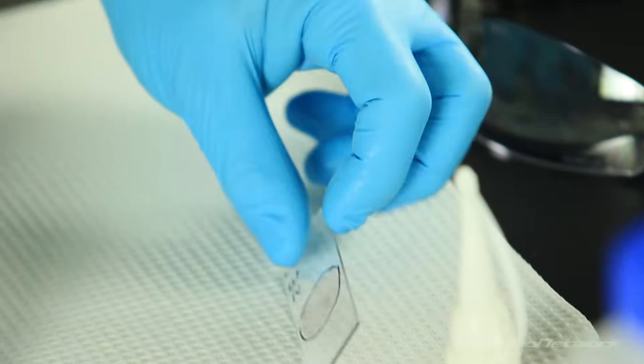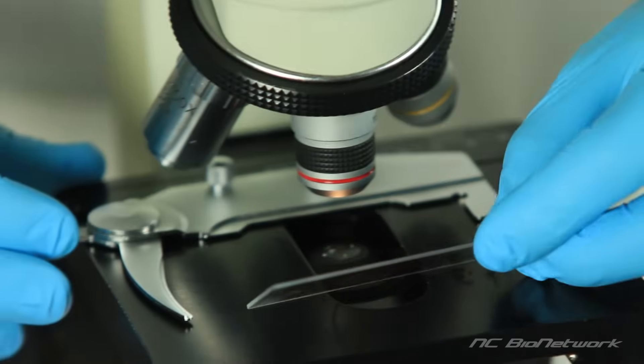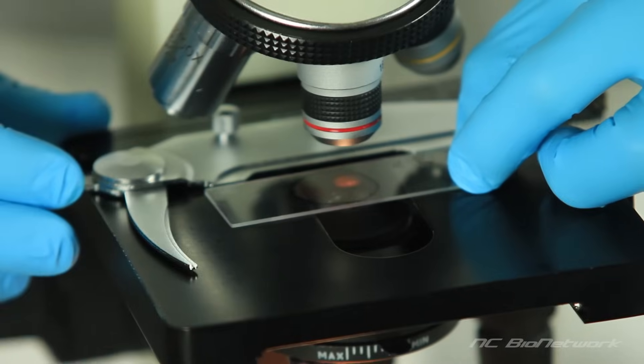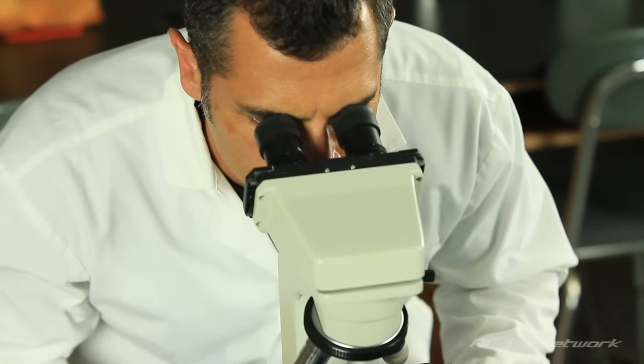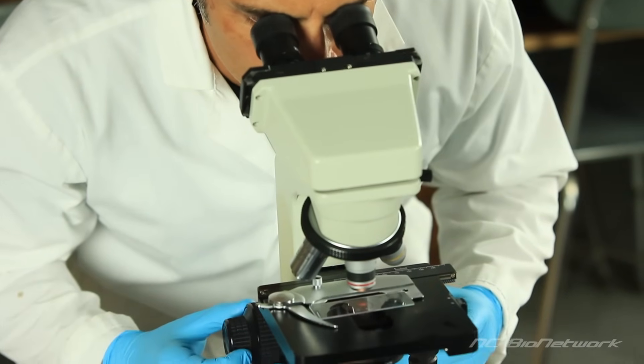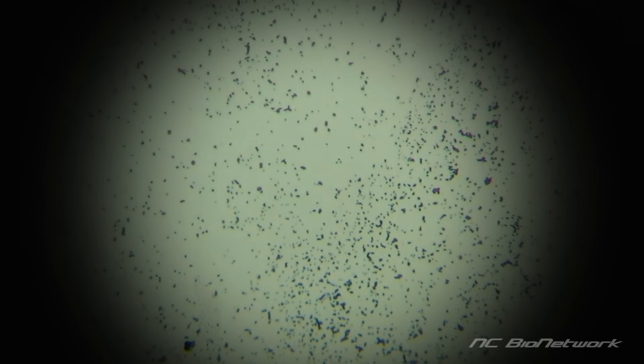Load the stained slide onto the microscope stage. Always start with the lowest power objective. Use the coarse and fine adjustments to bring the bacteria into focus.